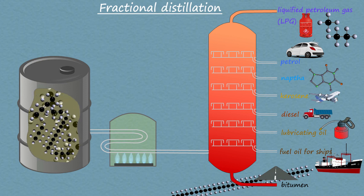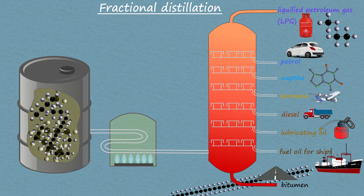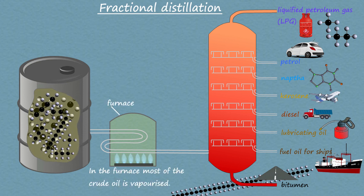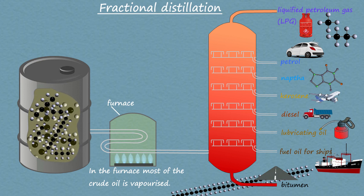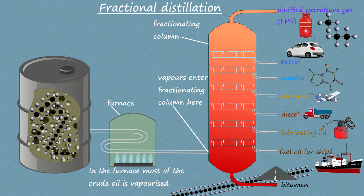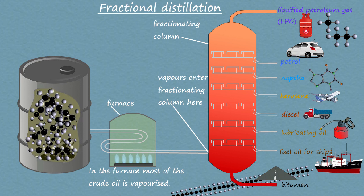To separate out the different parts or fractions found in crude oil, the crude oil undergoes a process called fractional distillation at the oil refinery. Here the oil enters a hot pipe inside a furnace where it is heated to high temperature. This causes most of the hydrocarbons in the crude oil to turn into gases or vapours. These hot gases or vapours then enter a tall, narrow fractionating column. This fractionating column has a temperature gradient, which simply means that it is hot at the bottom and gets cooler as you near the top of the column.